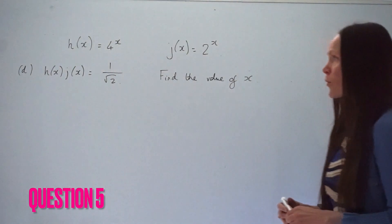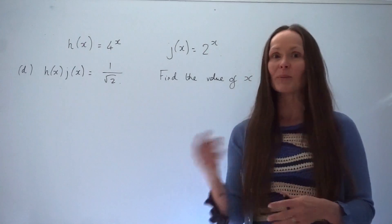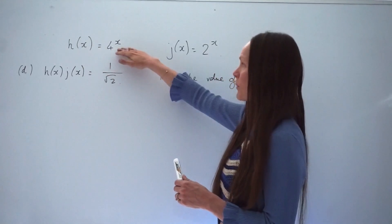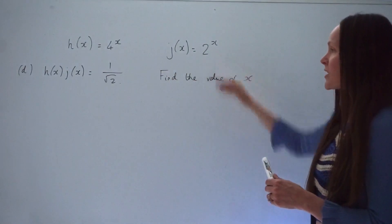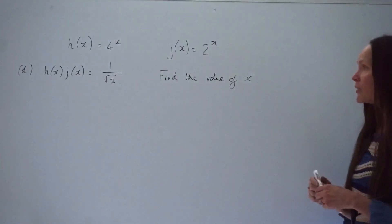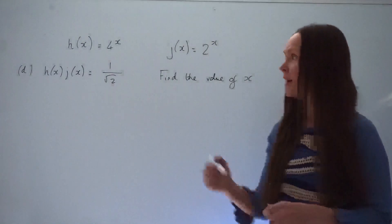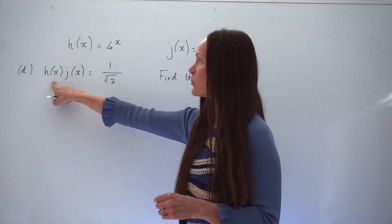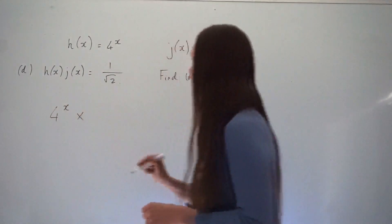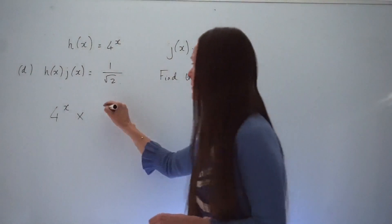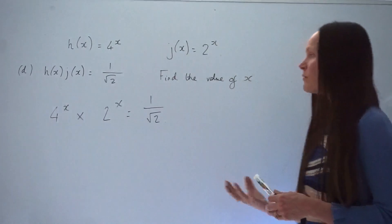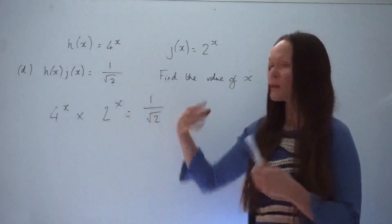One more question — a functions question that overlaps with indices. Two functions are given: h of x equals 4 to the power of x, and j of x equals 2 to the power of x. Multiplying them together gives 1 over root 2, and we have to find x. Rewriting with the same base: 4 is 2 squared, so h of x becomes 2 squared raised to x, giving 2 to the power of 2x. And 1 over root 2 is 2 to the power of negative a half.